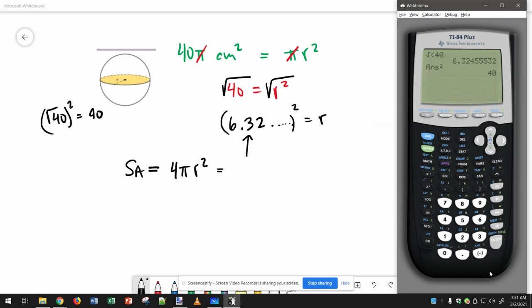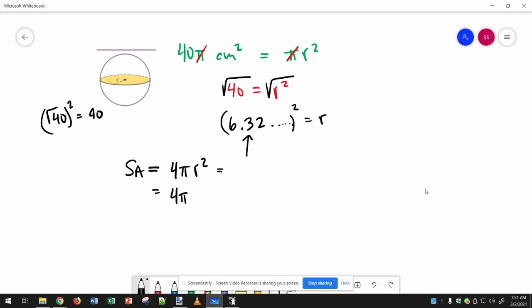Like, watch, if you just do 6.32 and you square it, you don't get all the way back to 40. So we have 4π, and then r² is 40, because we're doing 6.32 and so on squared. So then 4 times 40 is 160.